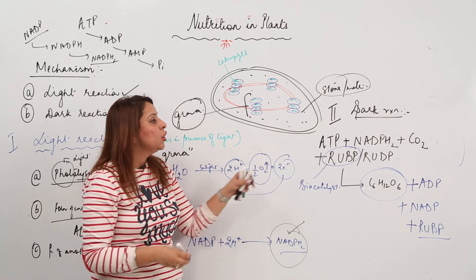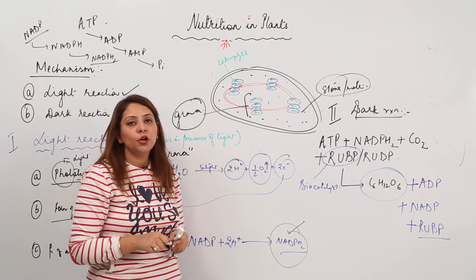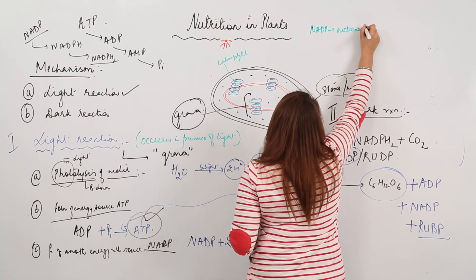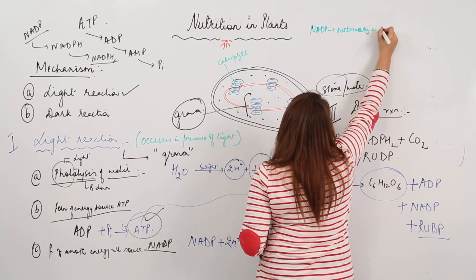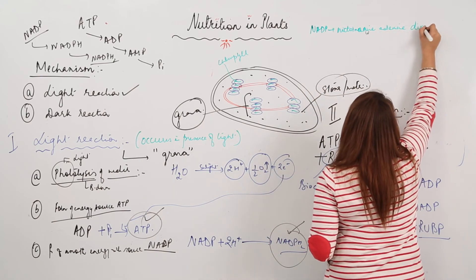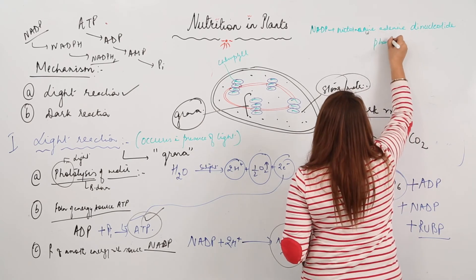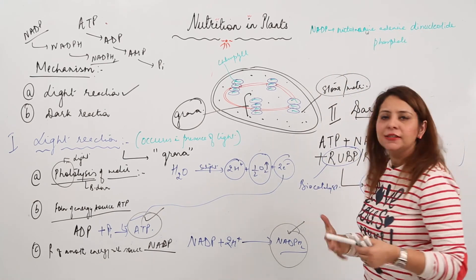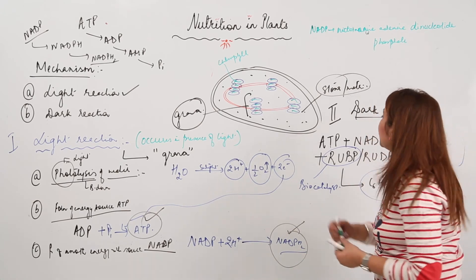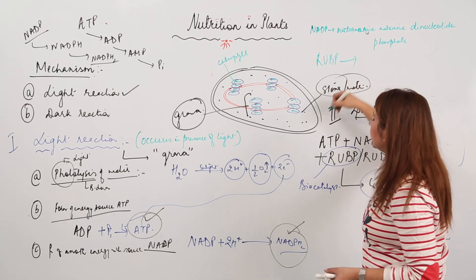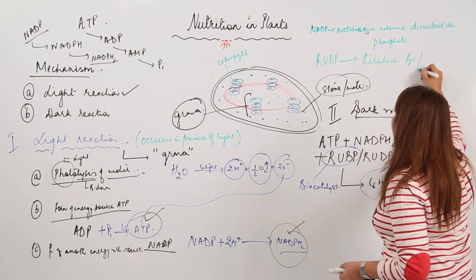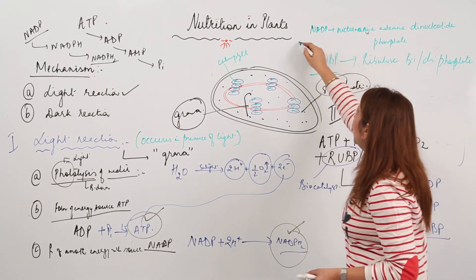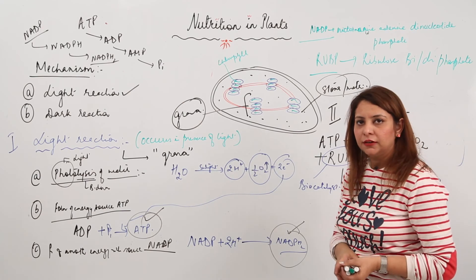The full form of NADP is nicotinamide adenine dinucleotide phosphate, and when H is attached it becomes the reduced form — NADPH. For simplicity, the abbreviation NADP is used. The full form of RuBP, which acts as a bio-catalyst in the dark reaction, is ribulose bisphosphate (or ribulose diphosphate, depending on whether you write RuBP or RUDP).